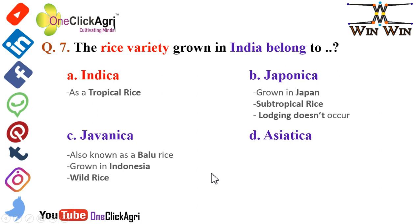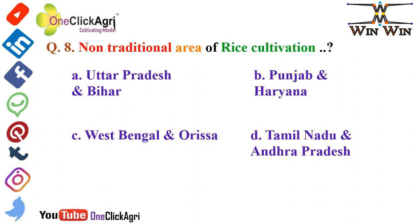The next question: the non-traditional area of rice cultivation is Punjab and Haryana, and it is a traditional area for wheat.